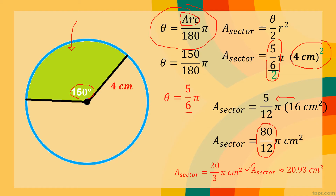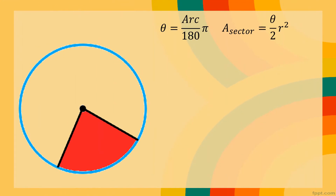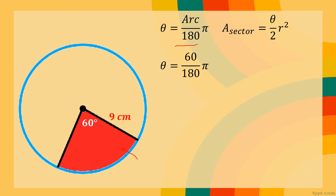Another example. For us to determine the area of this sector — the red region — we first need the data. Since the angle is given in degrees, we convert to radian measure. Using the formula, θ = (60/180) × π. Since 60/180 simplifies to 1/3, our radian measure is (1/3)π.